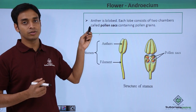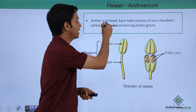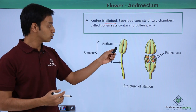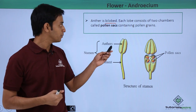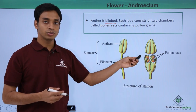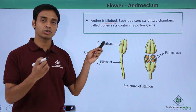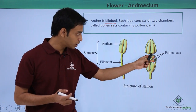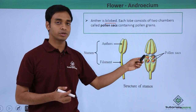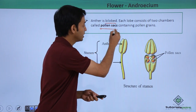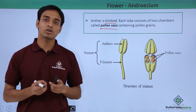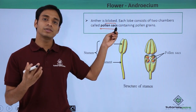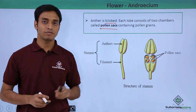If we look at an anther, we can see it is typically a bilobed structure — it has two lobes. If we take a cross-sectional view, we find that each lobe in turn contains two different chambers. These chambers are called pollen sacs, which contain the pollen grains — the male gametes — which are helpful in the process of sexual reproduction in flowering plants.